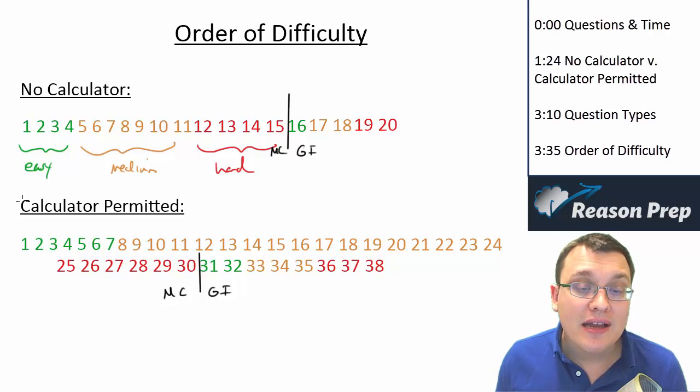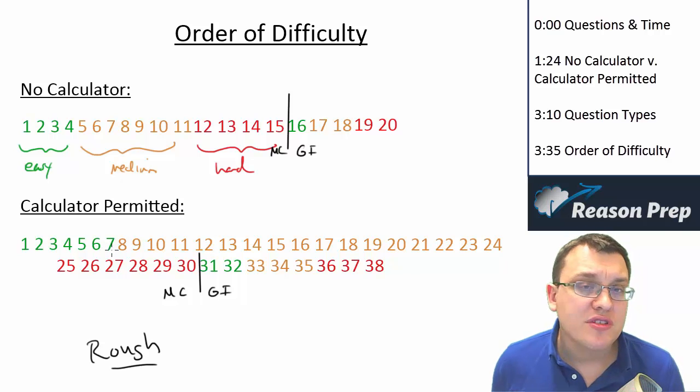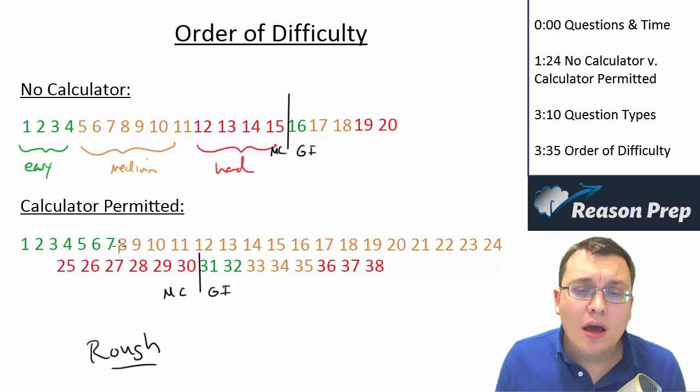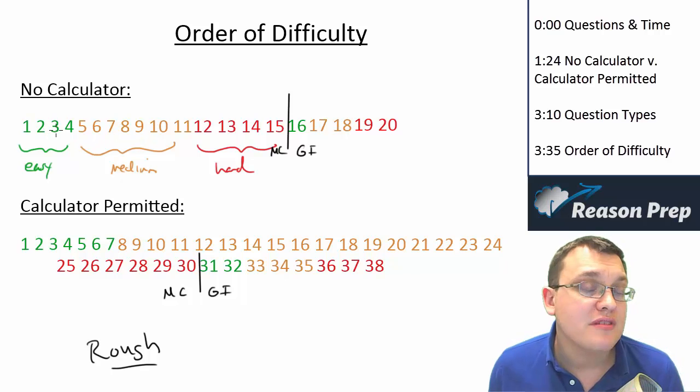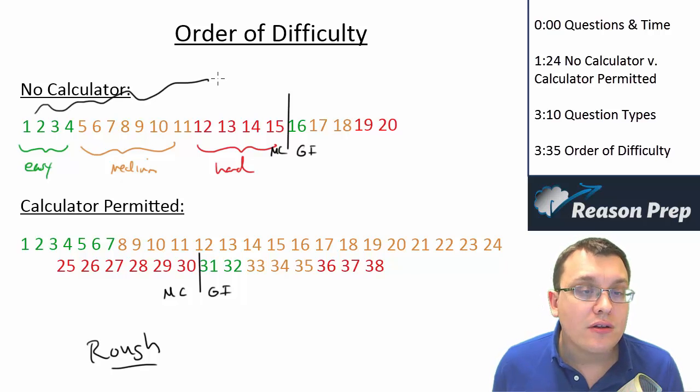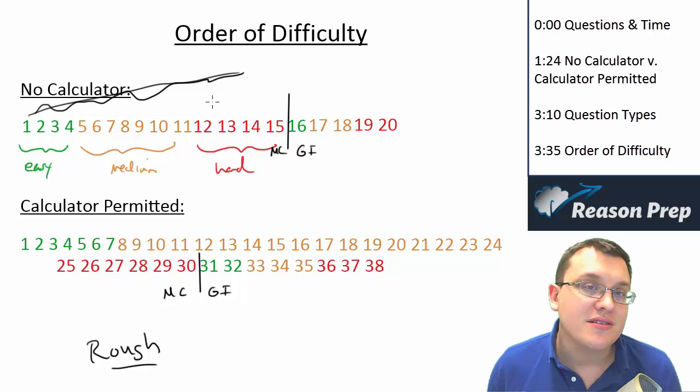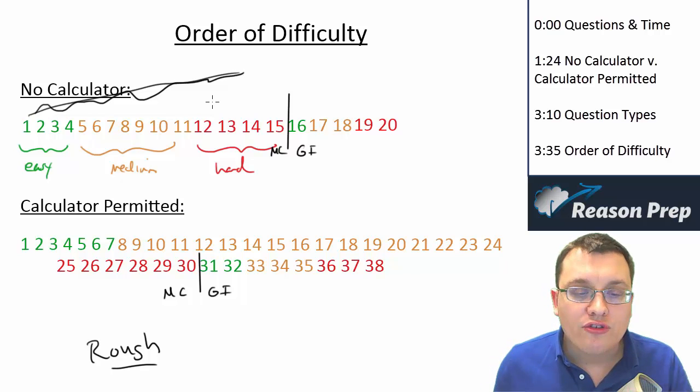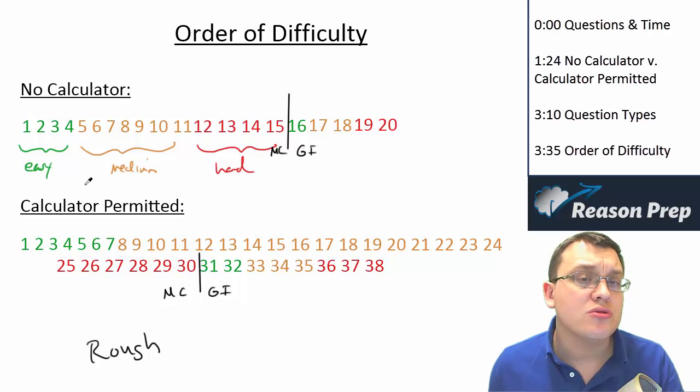The second thing to keep in mind is this is a rough order of difficulty. So I don't want you thinking that number seven is always going to be easy and number eight is going to be medium. I just made the color coding and I broke it down this way just so you can see the trend. You could have some mixed up. You could have some easier questions in the mediums, some mediums in the easies. The difficulty might bounce around a little bit, but the general trend is to get harder as they go along. So don't take this too literally, but just use this as a guideline to understand the structure of the test.